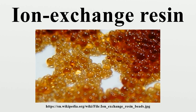There are multiple types of ion exchange resin. Most commercial resins are made of polystyrene sulfonate. Ion exchange resins are widely used in different separation, purification, and decontamination processes. The most common examples are water softening and water purification. Ion exchange resins were introduced as a more flexible alternative to natural or artificial zeolites, and are highly effective in the biodiesel filtration process.